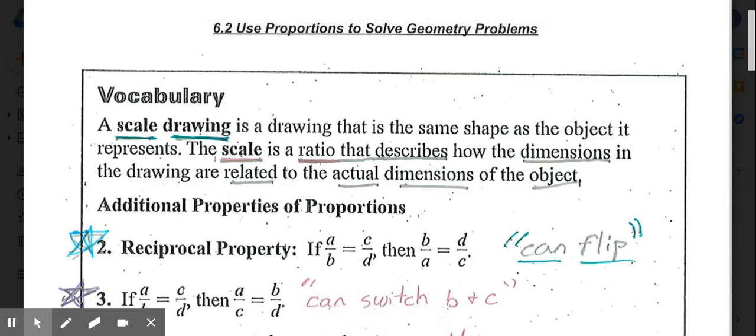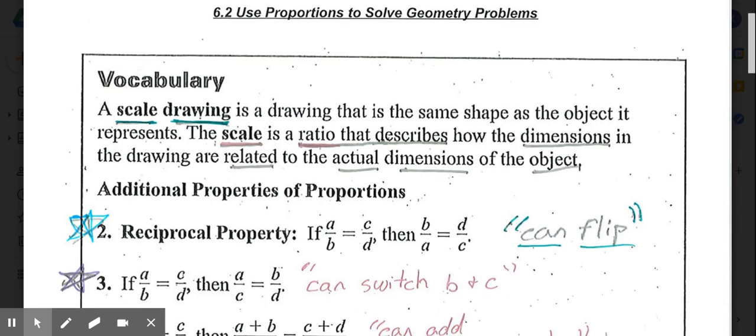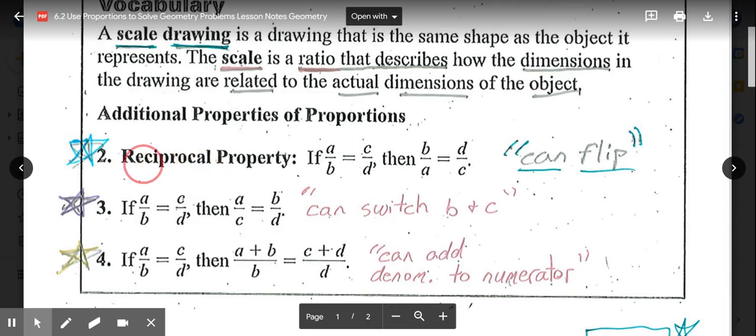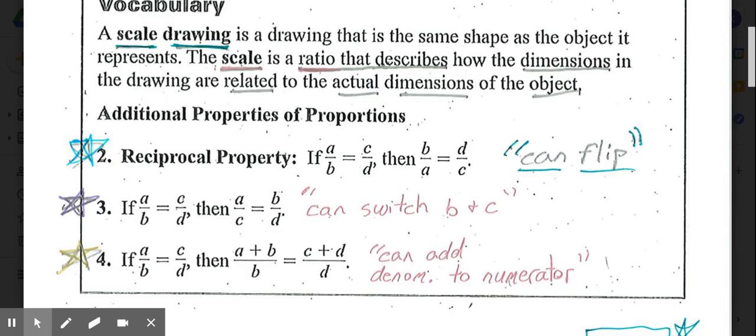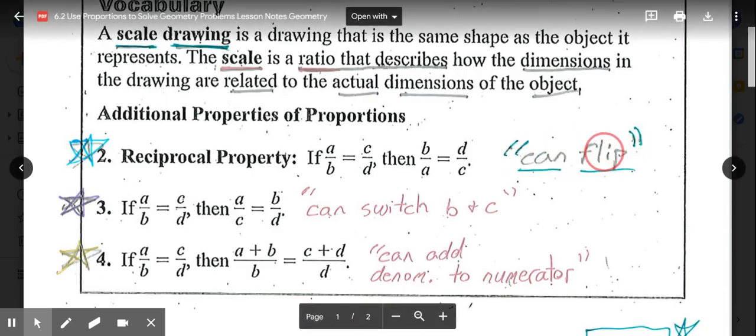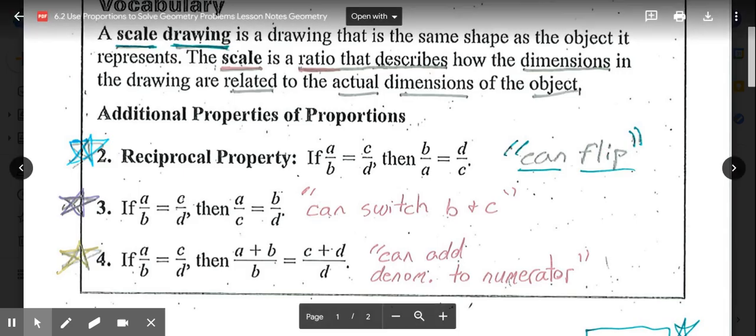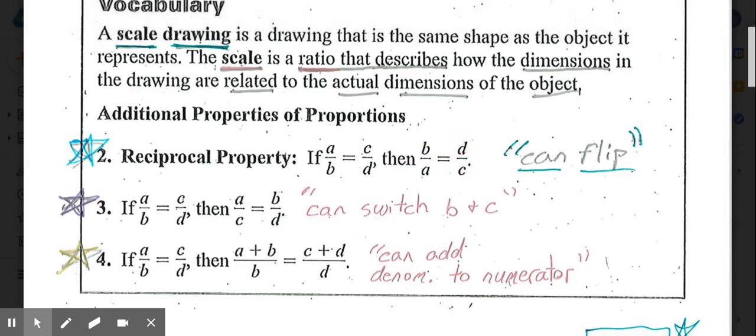We have some additional properties of proportions to go with the one from 6.1. The first one we're looking at in this lesson is the reciprocal property, which states if a/b = c/d, then b/a = d/c. The reciprocal property basically means we can flip the whole proportion and it is still equal. We can switch the numerator and denominator on both sides and leave them equal to each other and it's still true.